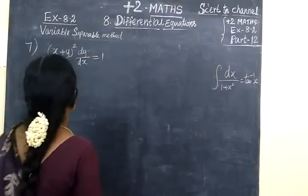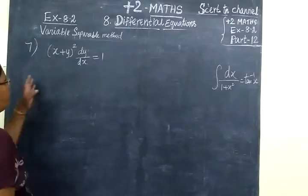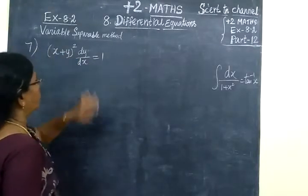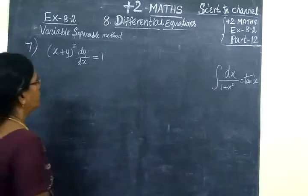Now Exercise 8.2, Part 12, Question 7. The question is: (x+y)² dy/dx = 1.